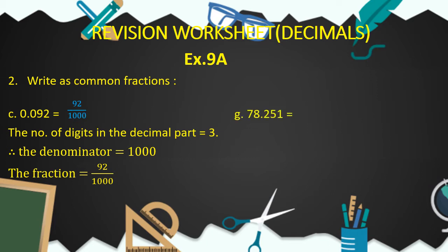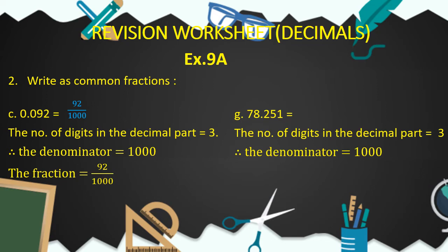Now let's come to part G of question number 2. Here we have the decimal fraction 78.251 and we have to write it as a common fraction. The number of digits in the decimal part is equal to 3, so the denominator is equal to 1,000 having 3 zeros. Therefore the fraction is 78.251 upon 1,000, where 78 is the whole part or integral part. Our answer is 78.251 by 1,000.